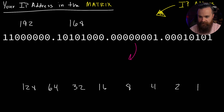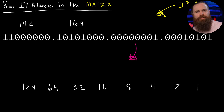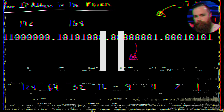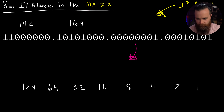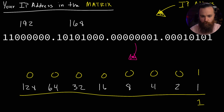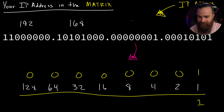Let's do the third octet - I want you to try this one yourself. Pause the video and see if you can do it. Let's walk through it: bringing down our binary - 0, 0, 0, 0, 0, 0, 0, 1. The only number that's turned on is the last one. We've got a 1, and 1 plus nothing else is 1. That's the next number in our IP address - this octet equals 1.